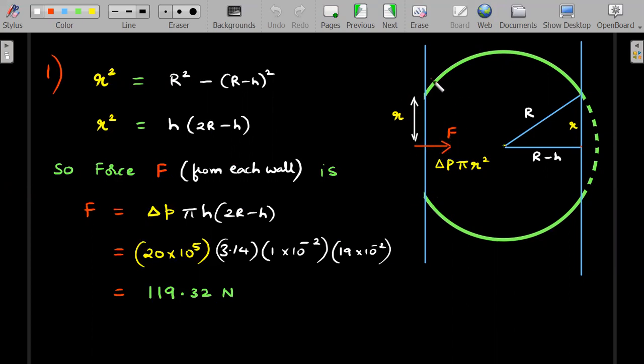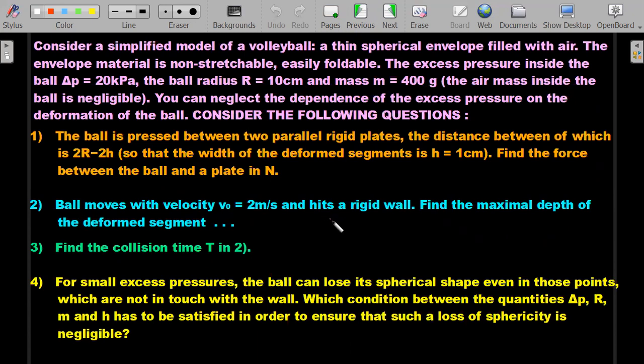If small r is the radius of the area of contact—a circle—the excess pressure applicable on this entire surface is going to push against this part. Since the pressure is uniform, you could write directly the value of this force from the wall as Δp × πr². The smaller r is easily calculable from the triangle here: this small depth is h, so this would be R - h. Using Pythagoras theorem, you get the value. Force F upon substitution with R = 10 cm and h = 1 cm gives nearly 119.32 Newtons. This was a straightforward relation I'll carry forward to the second question.